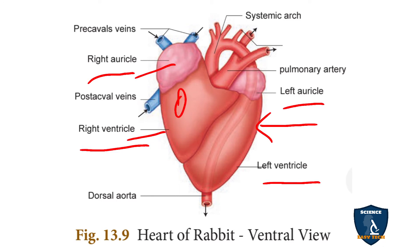That valve is called the tricuspid valve and the aperture is called the auriculoventricular aperture. And in between the left auricle and left ventricle, you have bicuspid valves.